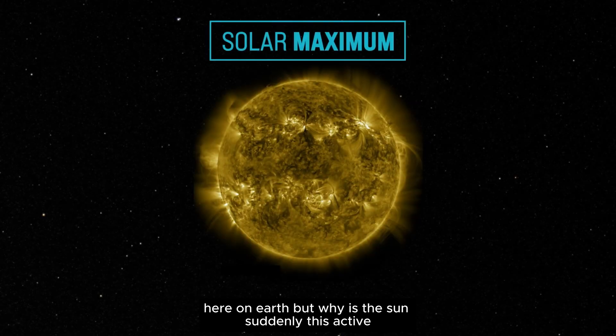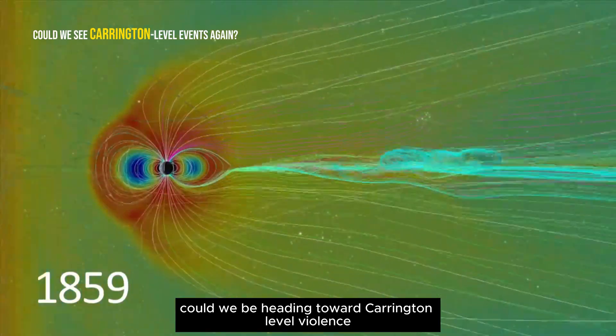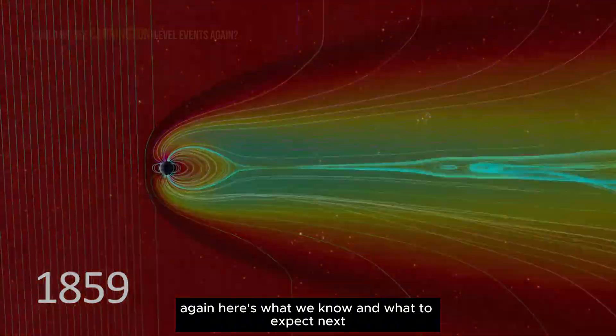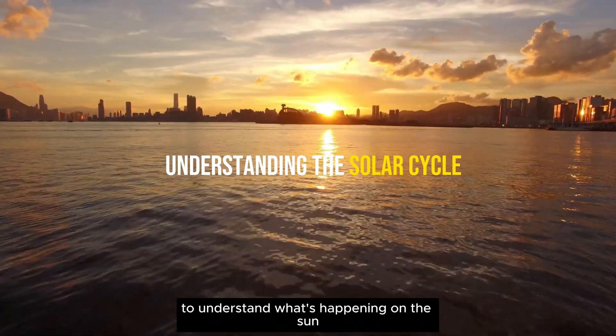But why is the sun suddenly this active? Is the cycle reaching its peak? And could we be heading toward Carrington-level violence again? Here's what we know, and what to expect next.